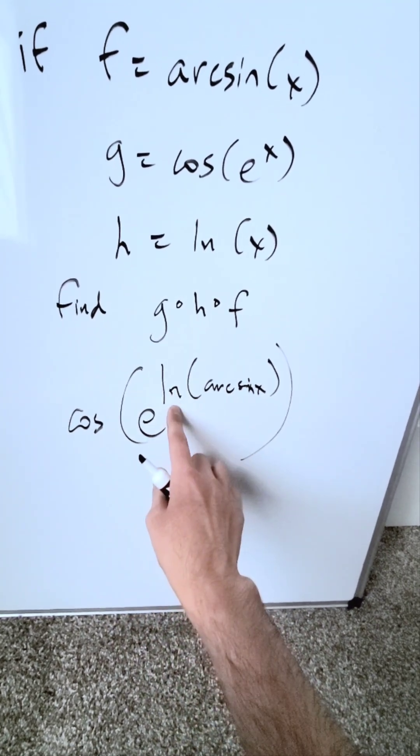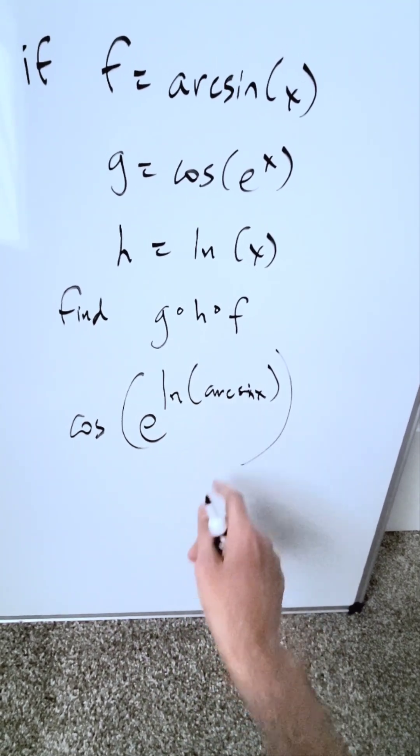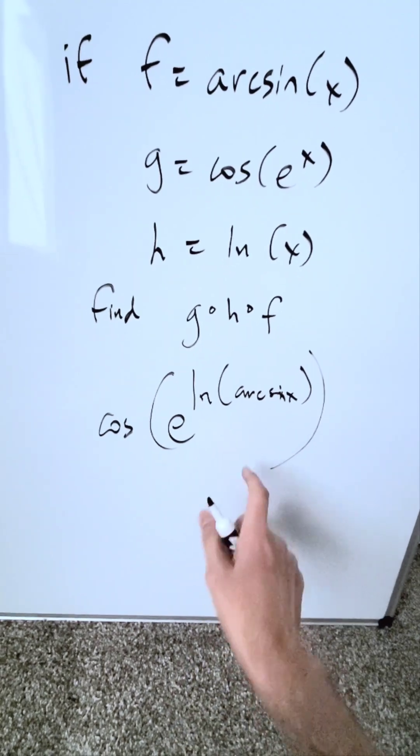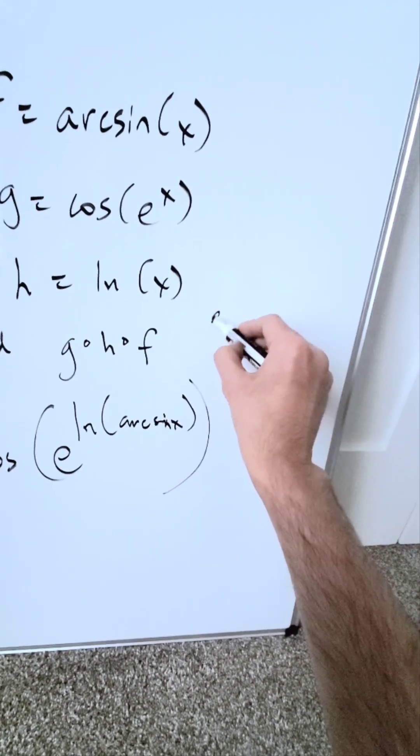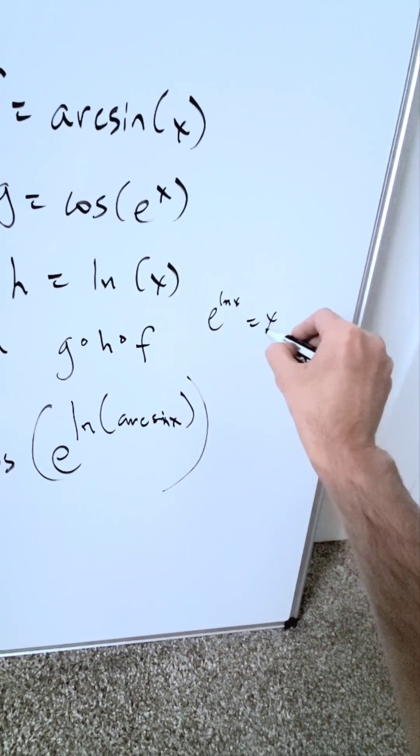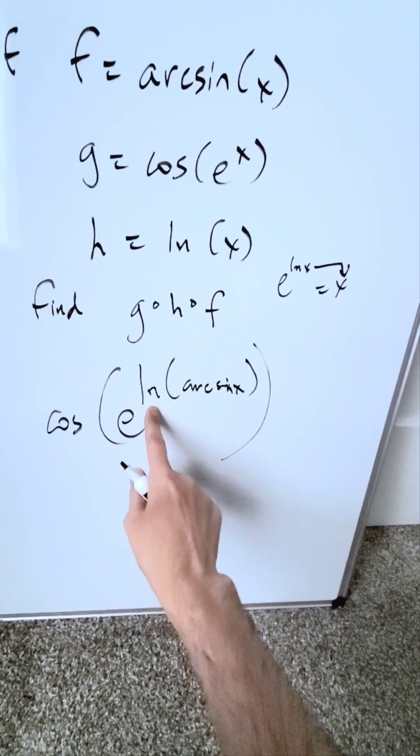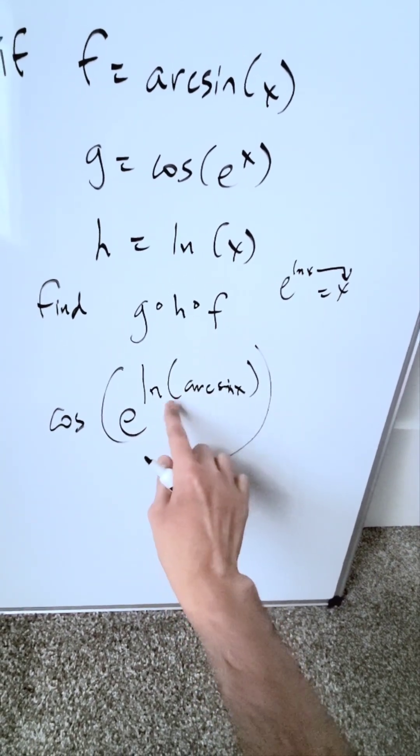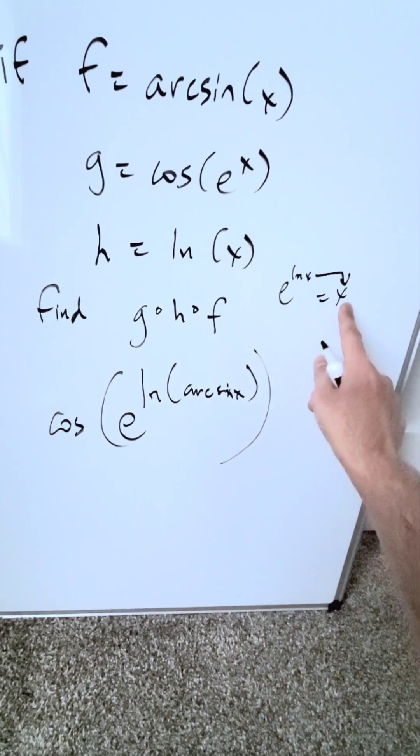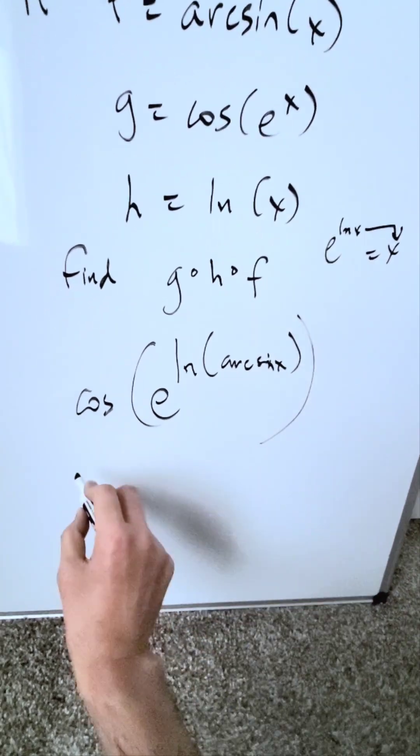Cosine of e^(ln(arcsin(x))). How do we evaluate this? Remember the identity: e^(ln(x)) = x. I have e^(ln(arcsin(x))), meaning all of this evaluates to arcsin(x).